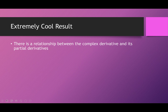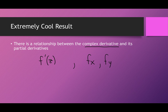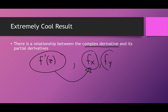So what's the extremely cool result? There's a relationship between the complex derivative F prime of Z and its partial derivatives F sub X and F sub Y. The regular old derivative we were computing can be related to the partial derivatives of F with respect to X and the partial derivative of F with respect to Y — which is kind of insane.